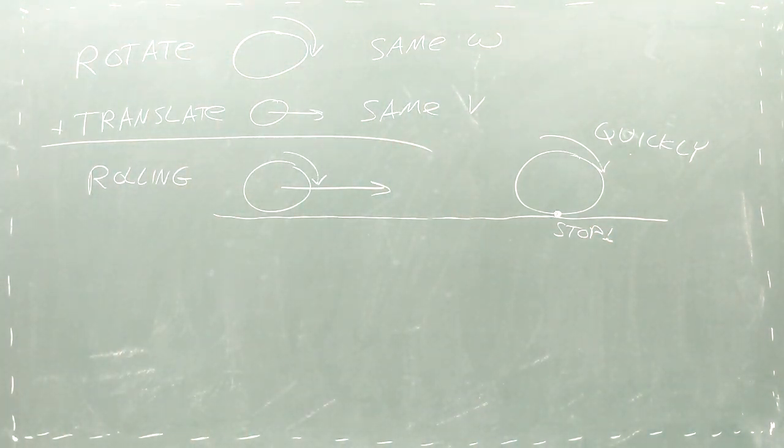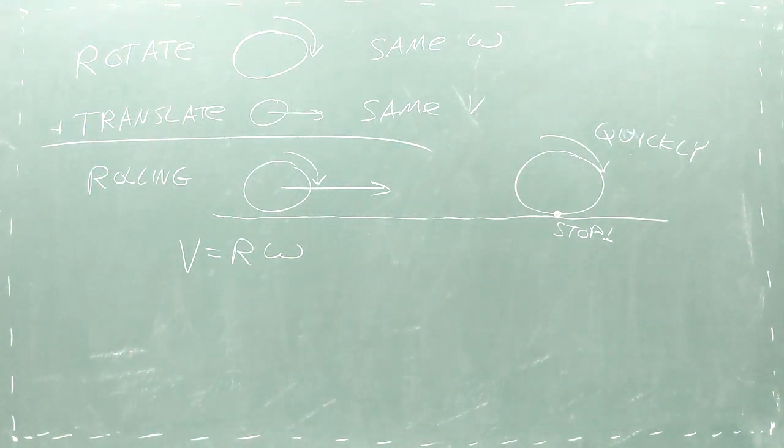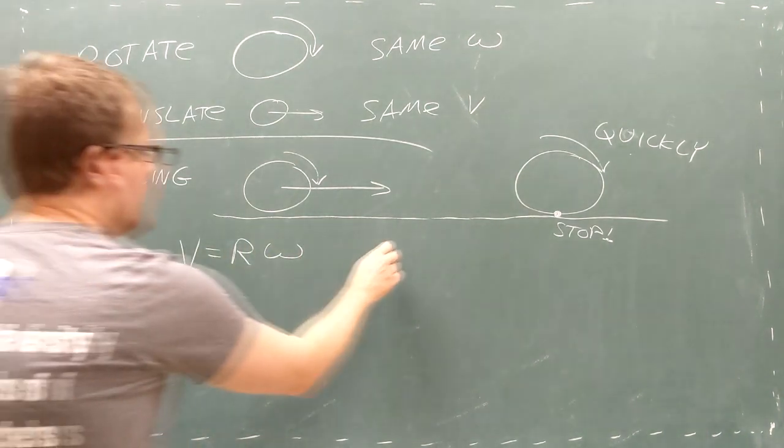The faster the wheel rotates, the faster it moves forward, giving its rotational velocity and linear velocity a simple relationship involving the radius of the wheel.